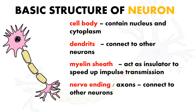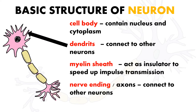This is the basic structure of a neuron. A neuron will have what we call the cell body, which contains the nucleus and also the cytoplasm. It also has dendrites that look like hair, and their function is to connect to another neuron — meaning another neuron will attach their nerve ending at the dendrite. That is how information flows from one neuron to another.